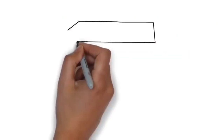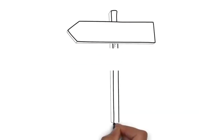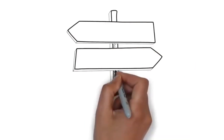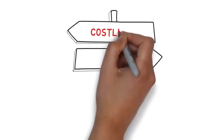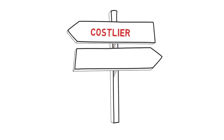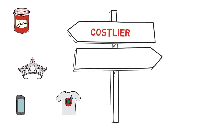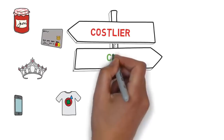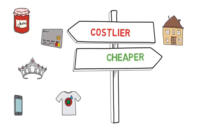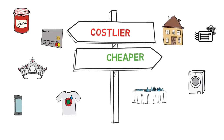After applying GST, the cost of some items will increase and some will decrease. Items whose cost will increase include packaged food, jewelry, ready-made garments, mobile services, and credit card services etc. Items whose cost will decrease include home, restaurant, AC, washing machine, microwave oven, small cars, and there will be less taxes on industries.